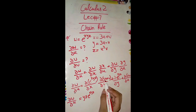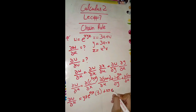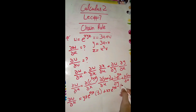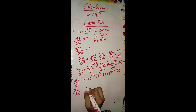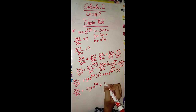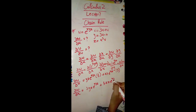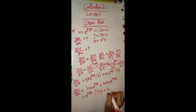∂x/∂u from x = 3u + v gives 3. ∂w/∂y gives xz·e^(xyz), and ∂y/∂u from y = 3u − v gives 3. So ∂w/∂u = 3yz·e^(xyz) + 3xz·e^(xyz).